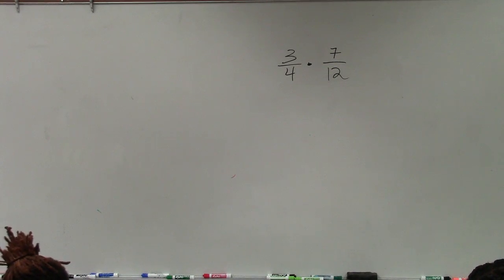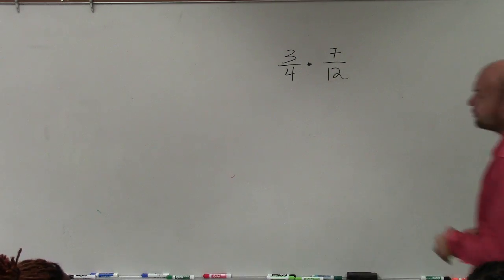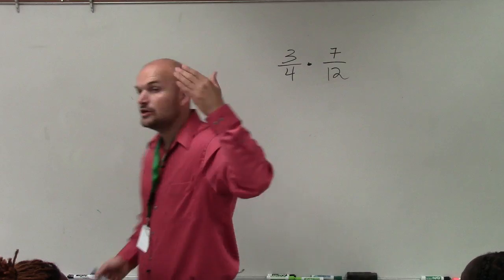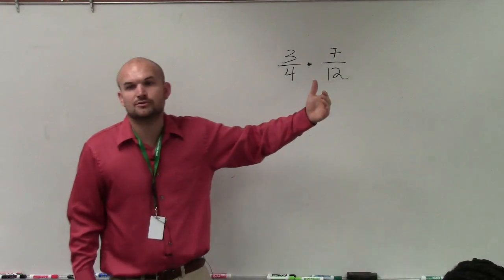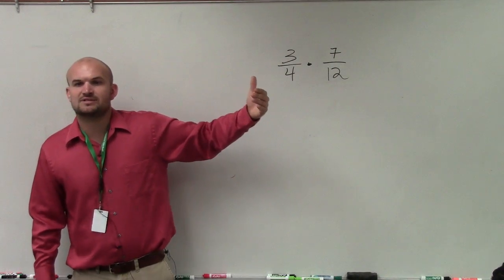Alright, so in this case when we have fractions, basically in general what we want to do is go ahead and multiply across. When we're multiplying fractions, you multiply the numerator times the numerator, denominator times the denominator.